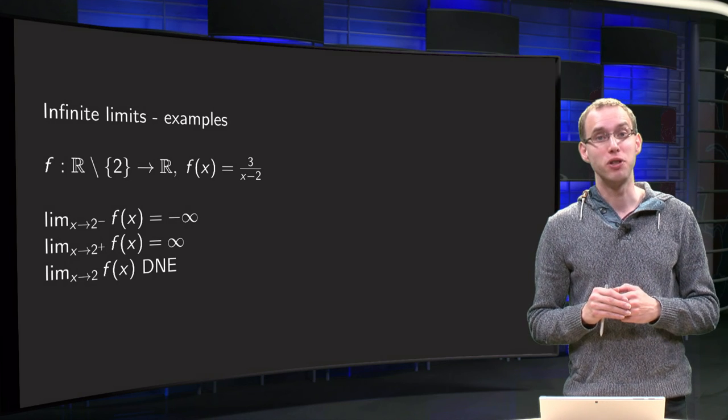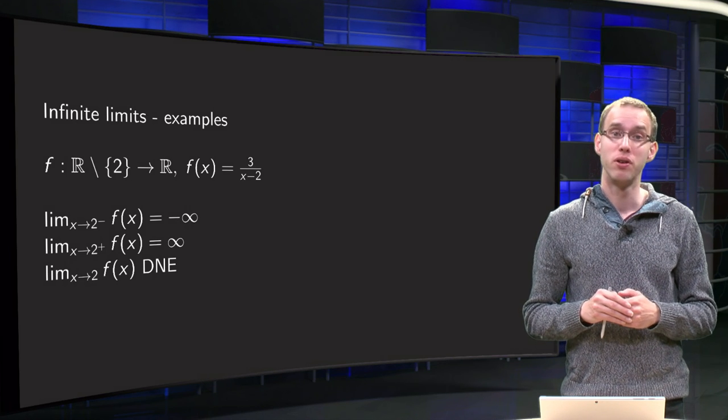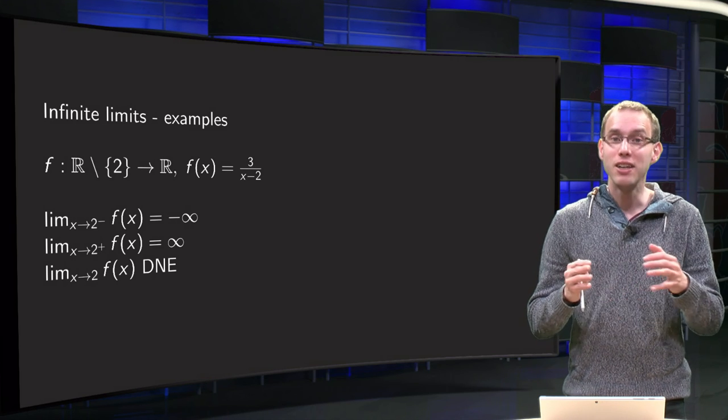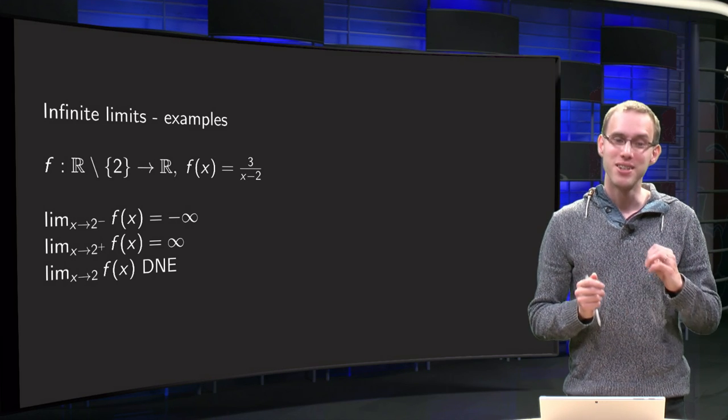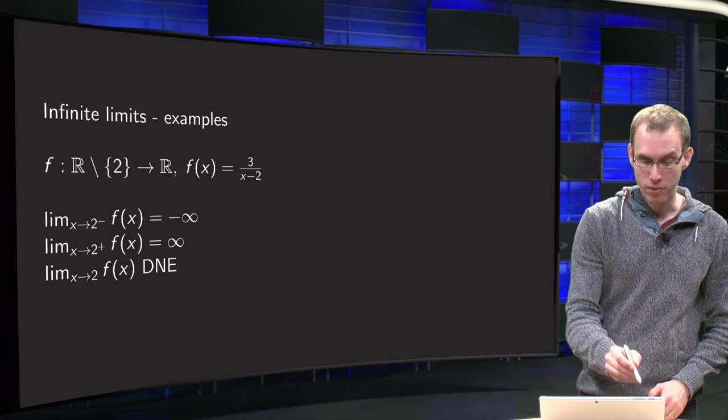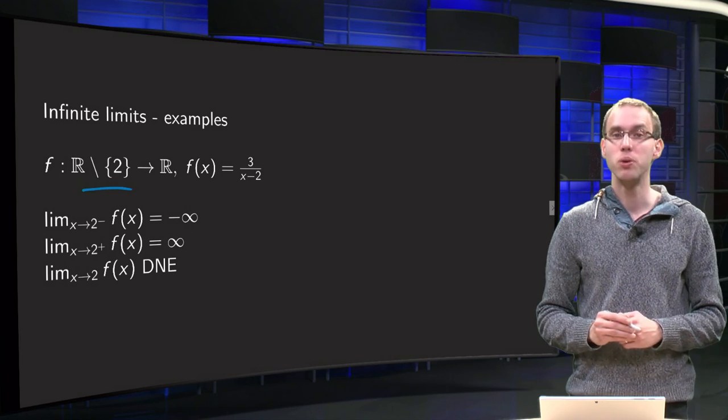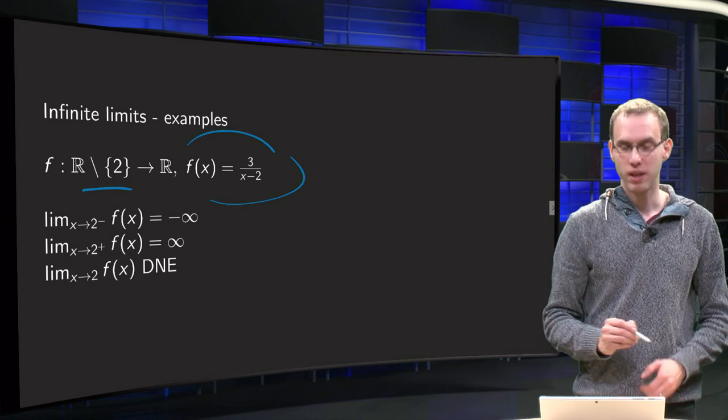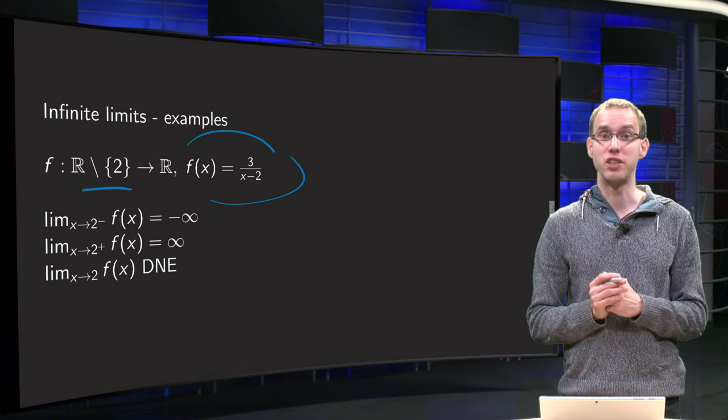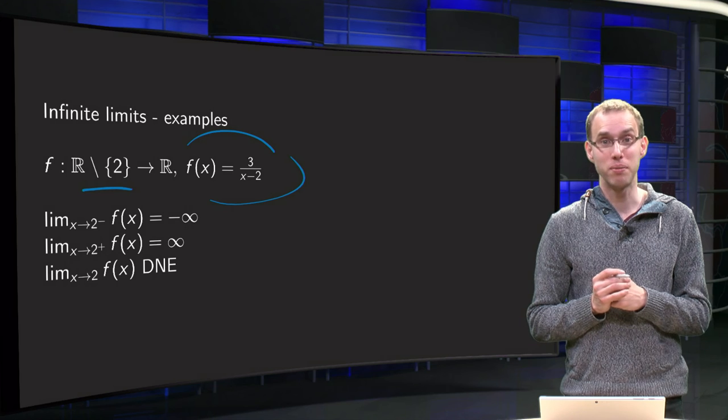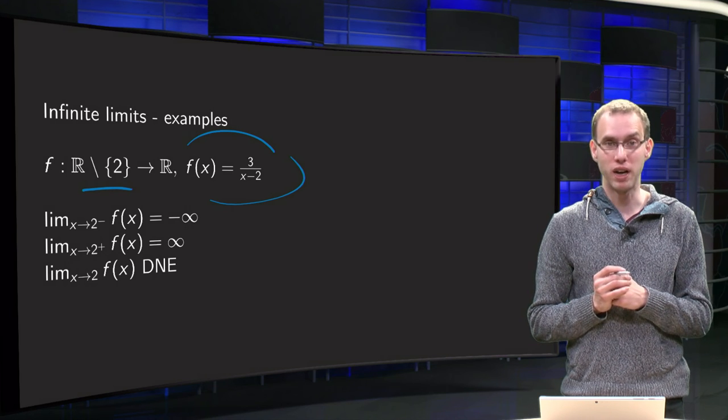In this video we will encounter the most important examples of functions with infinite limits in innocent looking functions. So, let us start with f from ℝ\{2} to ℝ, f(x) equals 3 over x minus 2. Looks interesting, right? Just a polynomial. Well, you have to be careful at x equals 2 because you are dividing by 0 over there.